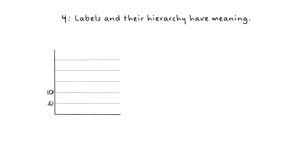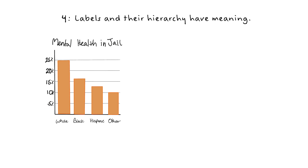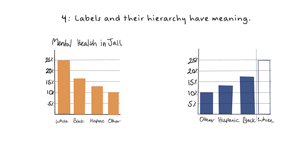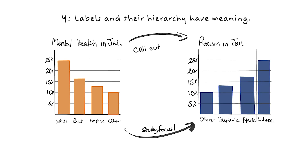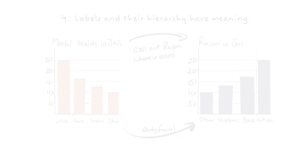4. Labels and their hierarchy have meaning. Who is shown first in the table, graph or visualization? Order conveys a hierarchy and can influence the way your audience interprets the data. To avoid perpetuating historical biases in the way your data is presented, consider alternative sorting techniques, such as study focus, specific story or argument, or quantitative relationship. Alphabetical order or sample size works too.